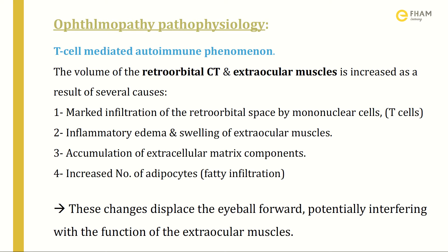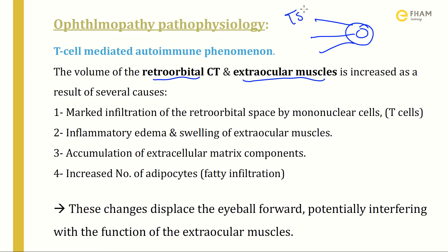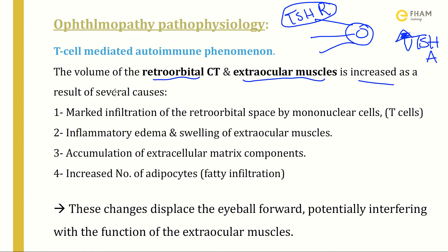Now we will discuss the pathophysiology of ophthalmopathy. It is a T-cell mediated autoimmune phenomenon. In the retroorbital and extraocular muscles, there is a TSH receptor. As discussed, there is an increased number of TSH receptor antibodies — stimulating, growth, and inhibitory types. These antibodies bind to the TSH receptor in this area and produce the signs of ophthalmopathy. The volume of retroorbital connective tissue and extraocular muscles increases as a result of several causes.